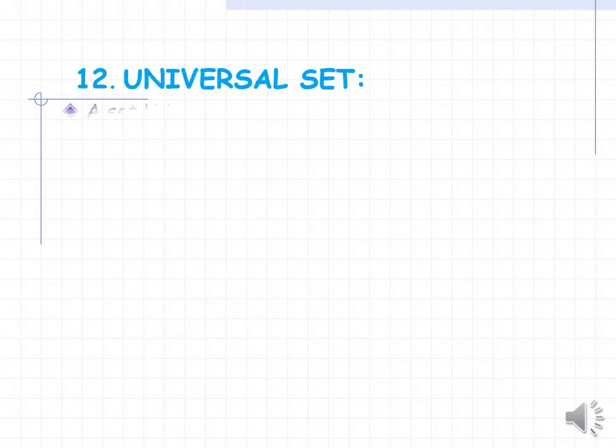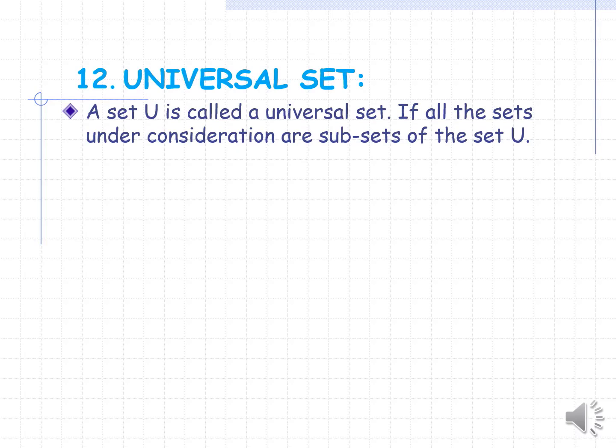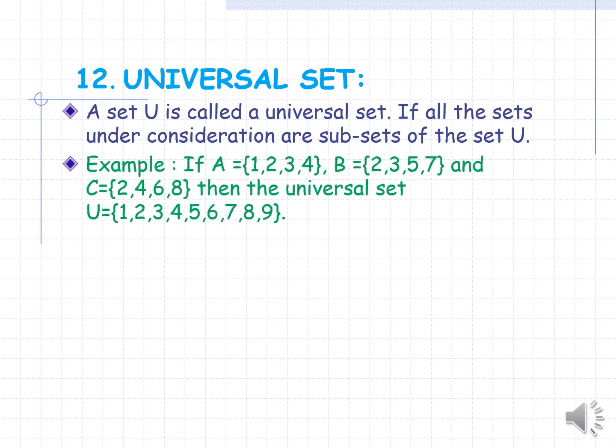Universal set. A set U is called a universal set if all the sets under consideration are subsets of the set U. For example, if A = {1, 2, 3, 4}, B = {2, 3, 5, 7}, and C = {2, 4, 6, 8}, then the universal set U should contain all the elements of set A, set B, and set C.